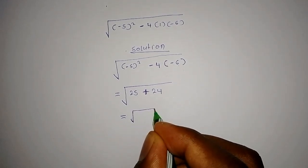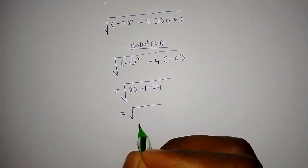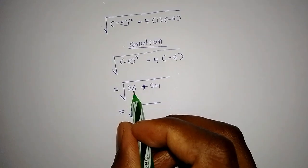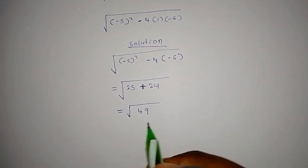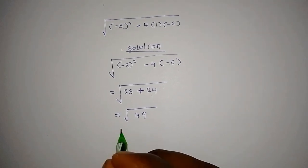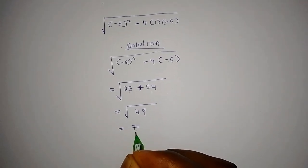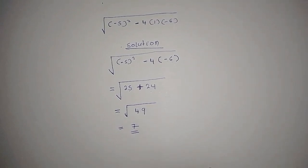Then we are going to add the answers that we found in the square root sign. That is 25 plus 24 will give us 49. And if you find the square root of 49, your solution becomes 7, and that becomes the answer to our question.